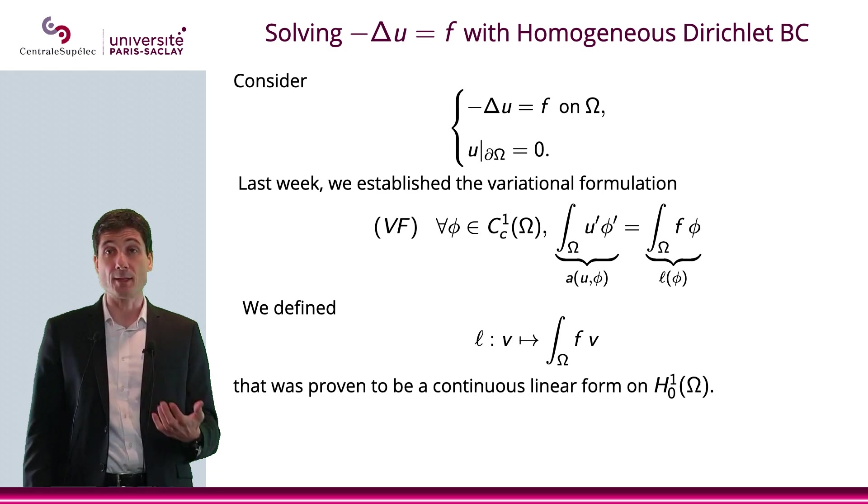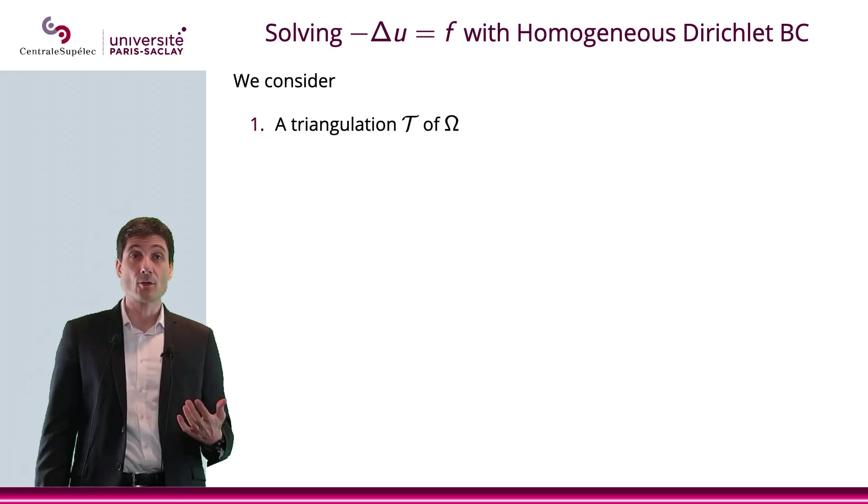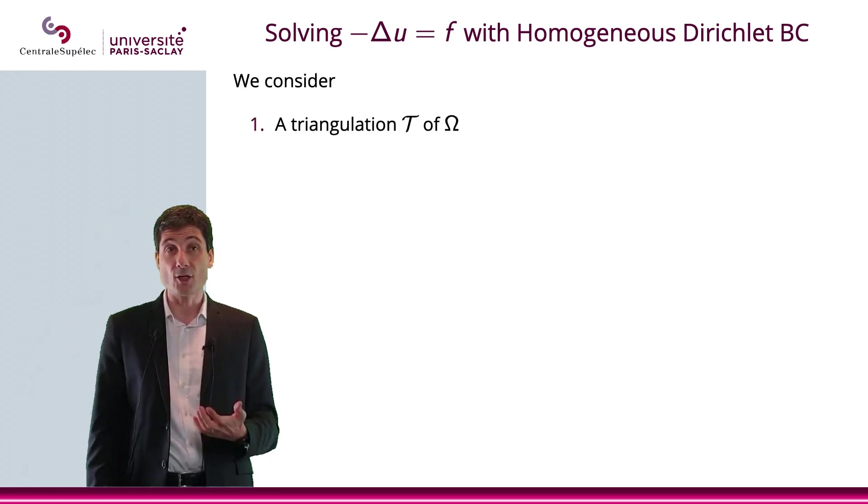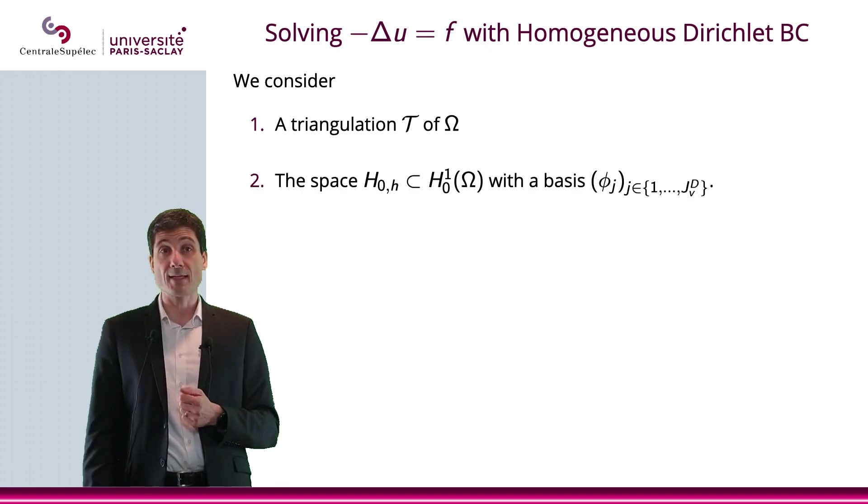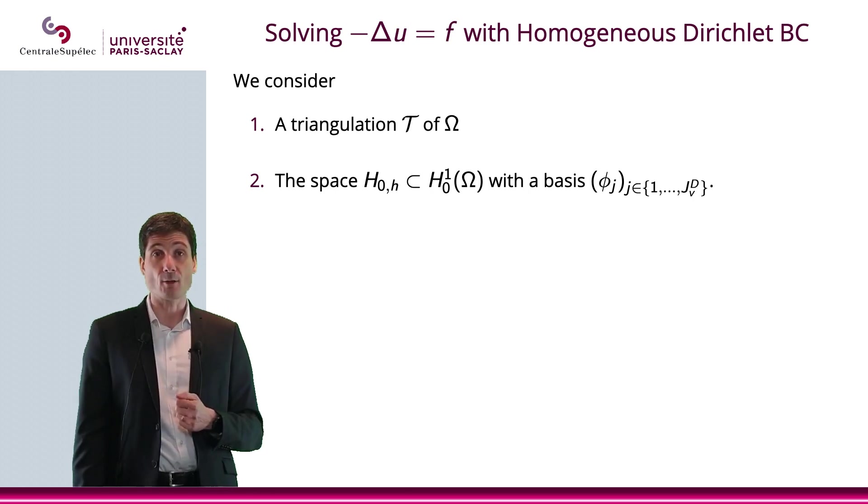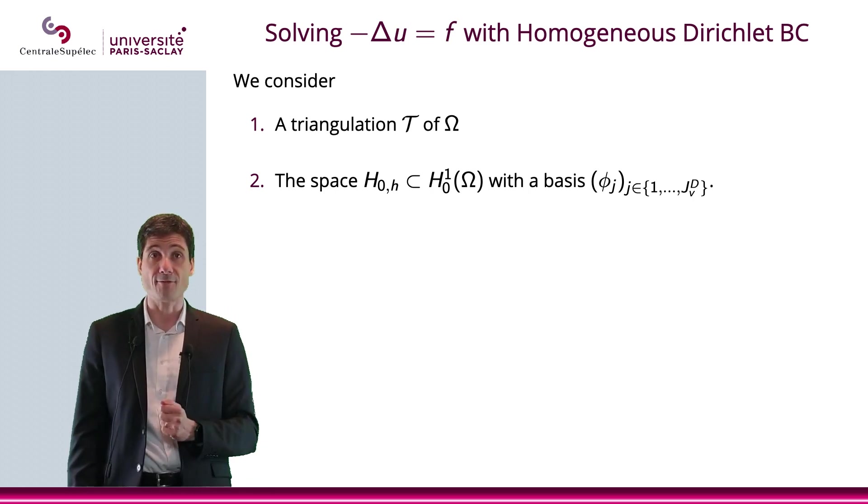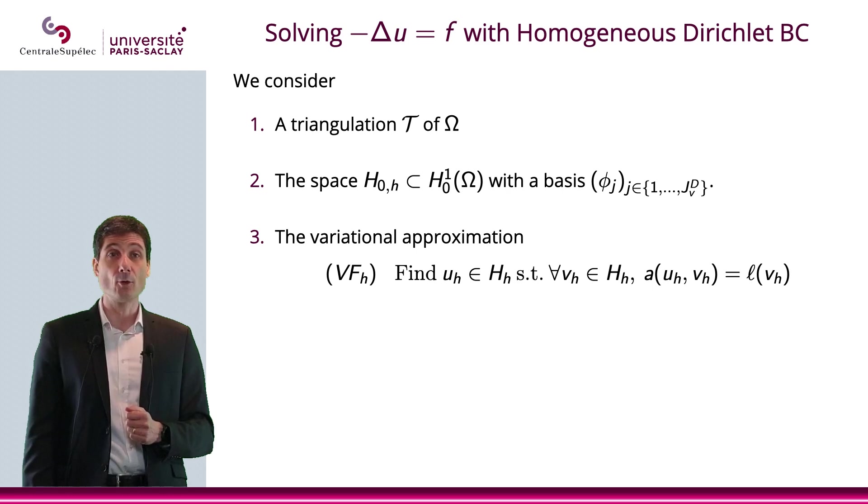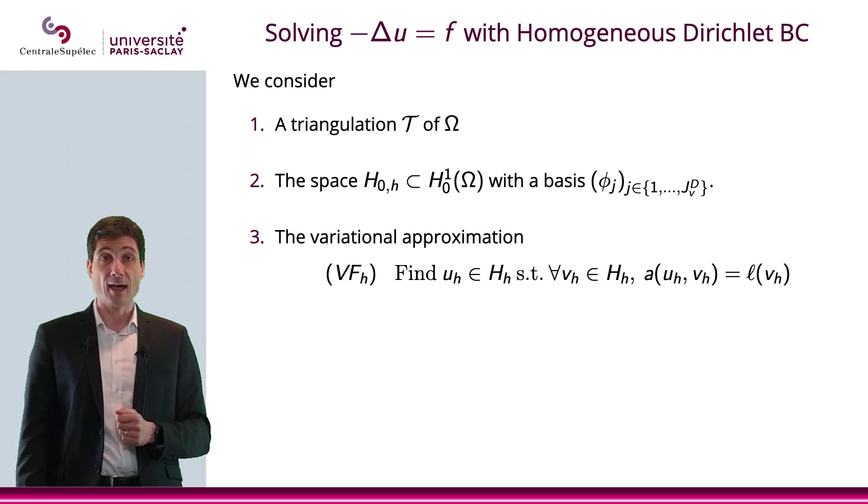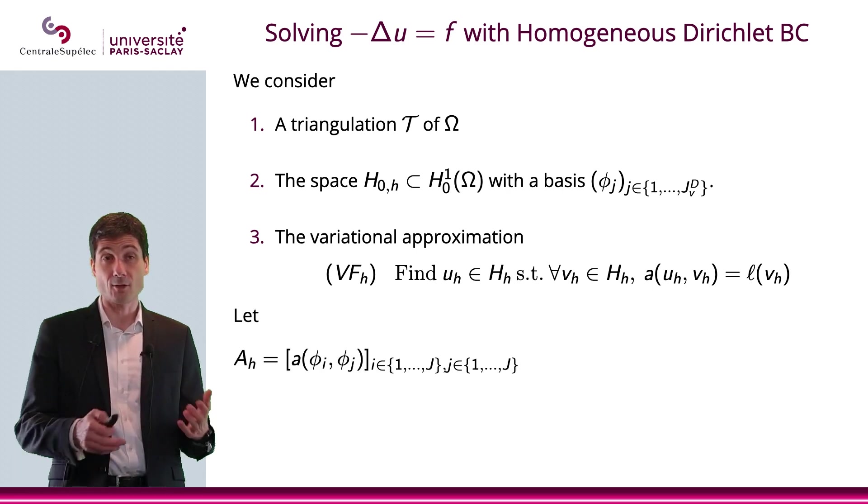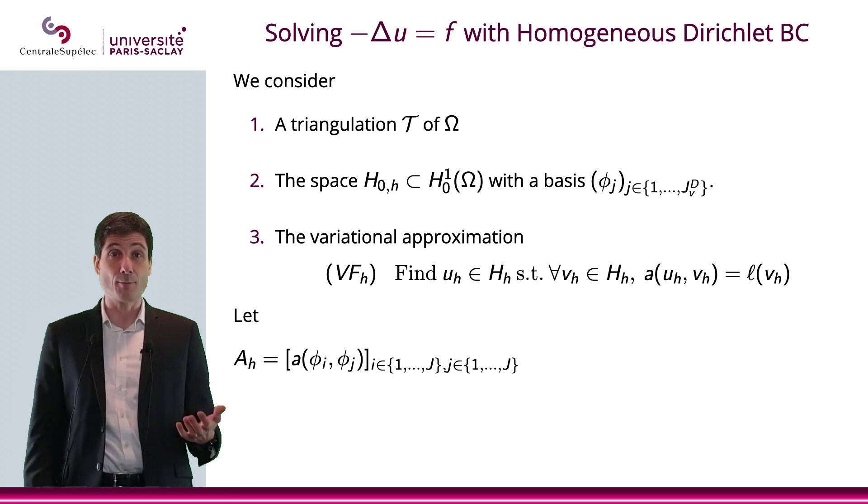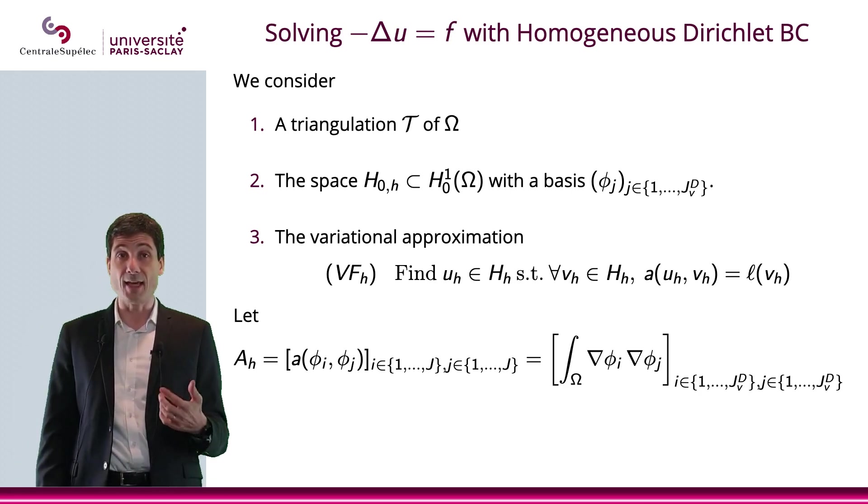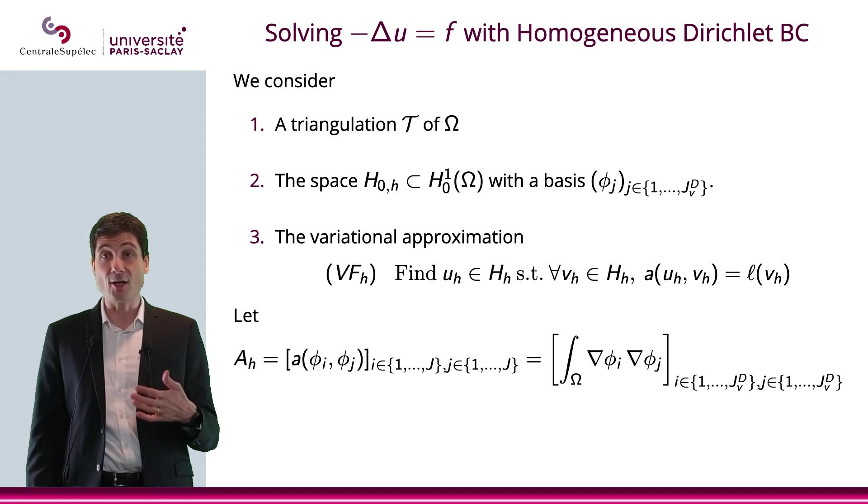Now, we're basically going to do exactly what we did in dimension 1. We're going to simply use this on the triangulation of omega. Then we're going to use the spaces H, 0, H, which will be included in H1, 0 of omega with the basis which just defined. And then we will look at the variational approximation and we will consider the rigidity matrix A, H. And that is simply the integral of del phi I del phi J.